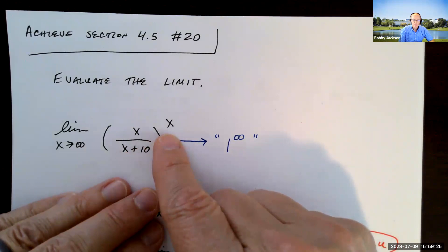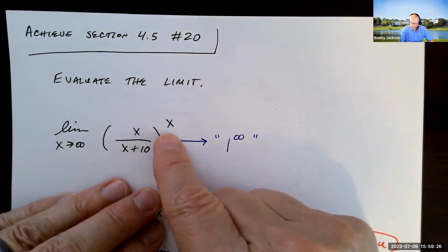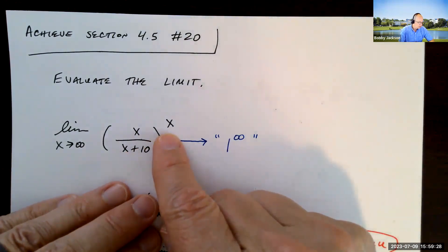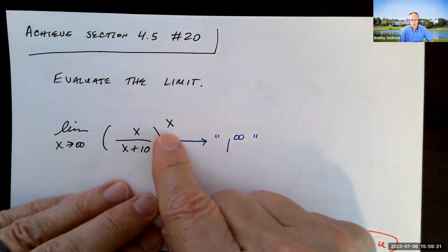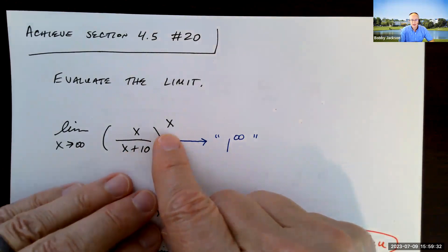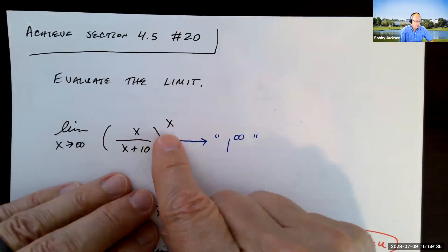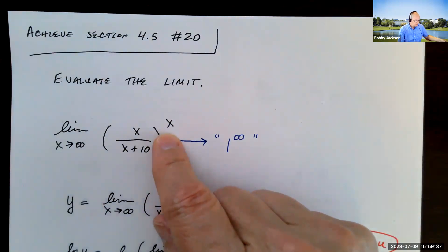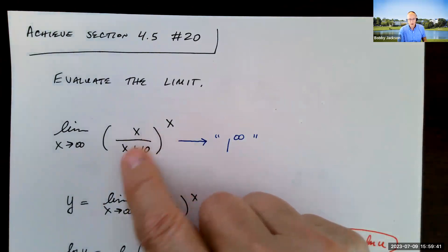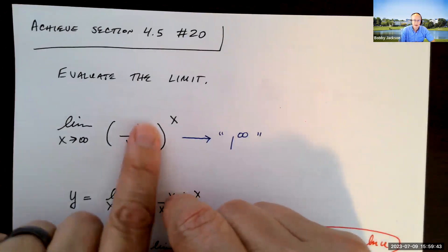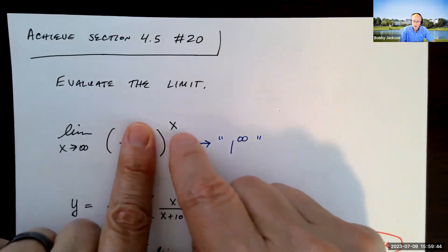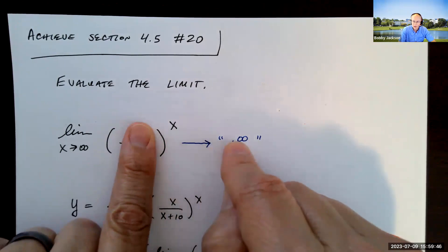This section is covering L'Hôpital's rule. Remember, L'Hôpital's rule works for limits of the form 0 over 0 or infinity over infinity. So we want to see what's the form of this limit. As x goes to infinity, the exponent x is clearly going to infinity.